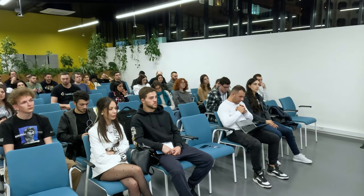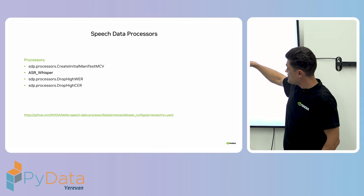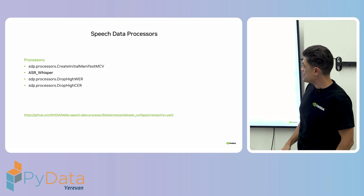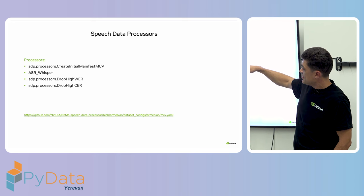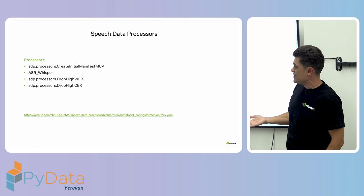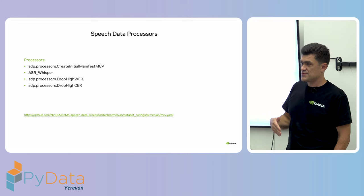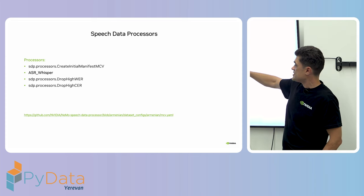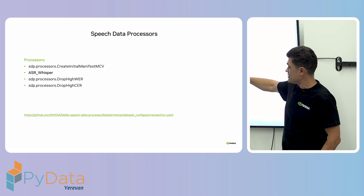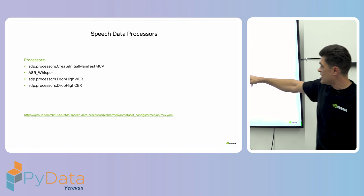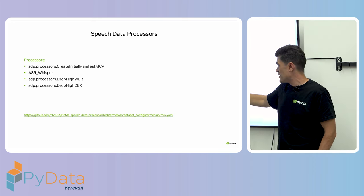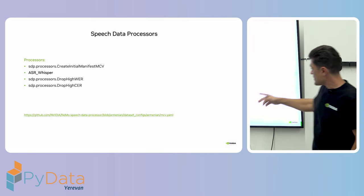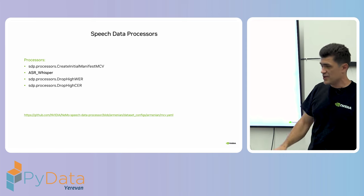You have an initial manifest creation step using a CreateInitialManifest processor, then I implemented an ASR step using the Whisper model from Hugging Face. Then I filter results using word error rate and character error rate — using DropHighWER and DropHighCER processors. You can check it out on our GitHub.